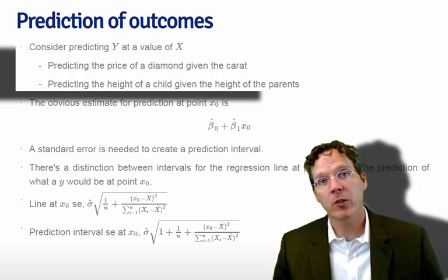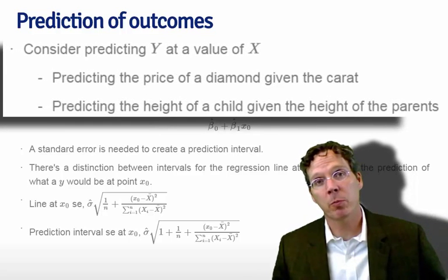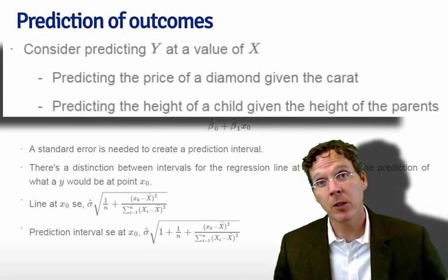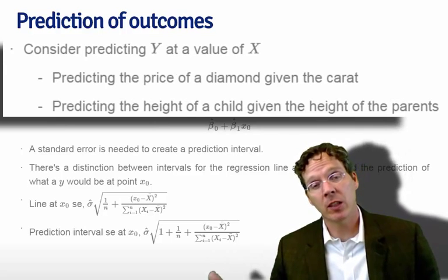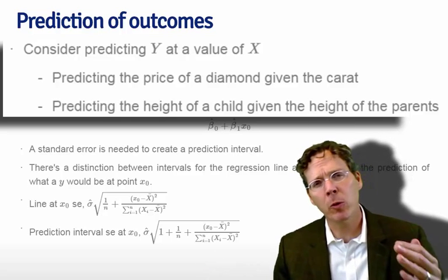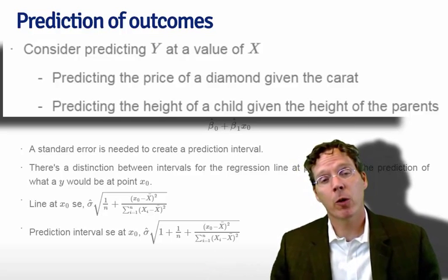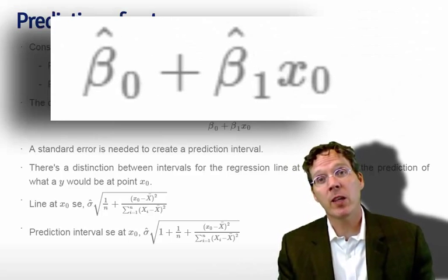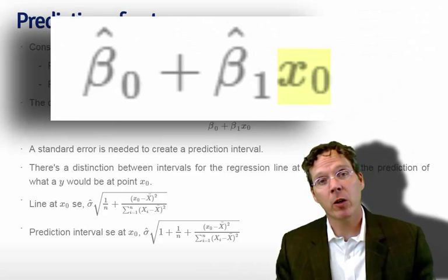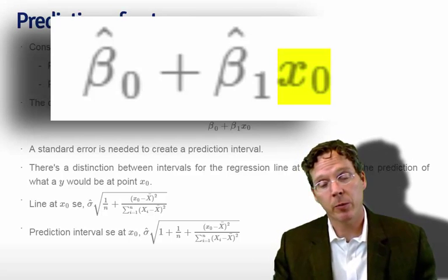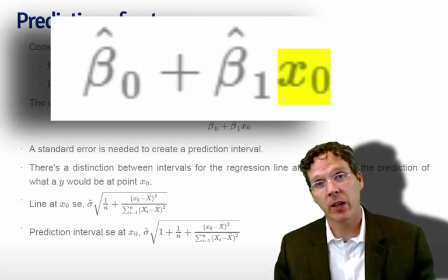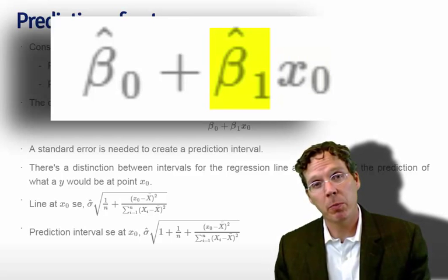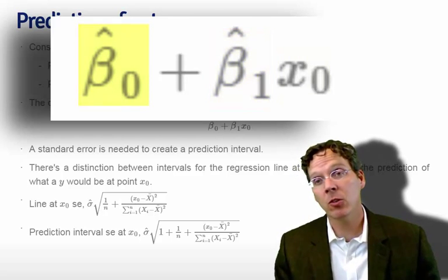So let's just talk about prediction. We might want to predict a response, which might be the price of a diamond at a particular mass in carats, or we might want to predict a child's height for a particular value of the parent's height. The obvious estimate in both cases is just take our x0, our predictor value that we want to predict at, multiply it times the relevant estimated slope beta 1 hat, and then add the intercept.